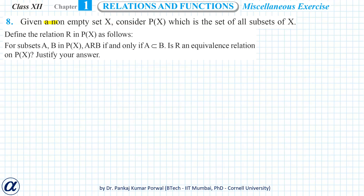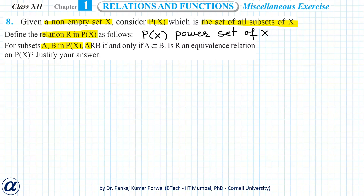In this question we are given a non-empty set X, and P(X) is the power set of X — that is, the set of all subsets of X. We have defined a relation R in P(X) such that if A and B are elements of P(X), then A is related to B if and only if A is a subset of B.